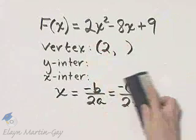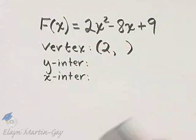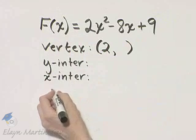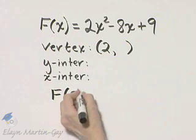Now how do you find the corresponding y-value of the vertex? Remember, it's got to be an ordered pair solution of this function, so we simply find f of 2.